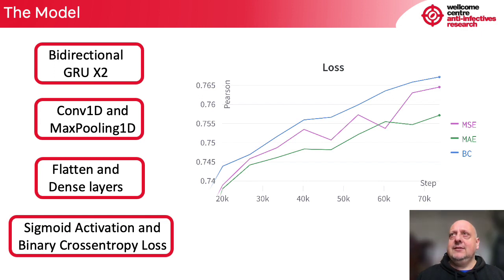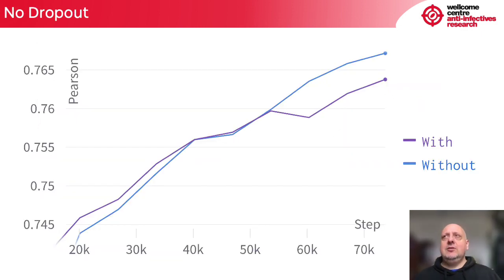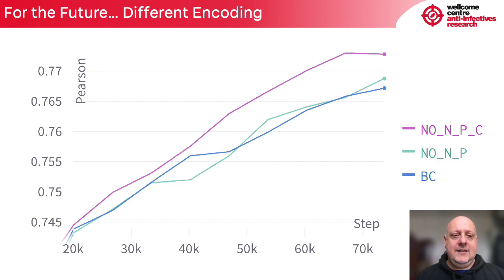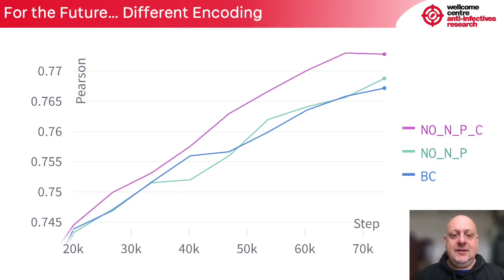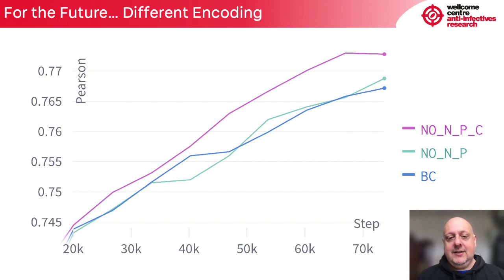Another thing that I noticed is that the neural network was working better without using dropout. Finally, I noticed that using or not using padding or the encoding of the N in the DNA sequence didn't really matter. What actually mattered was to remove the common sequence at the beginning and at the end of every promoter in the challenge.